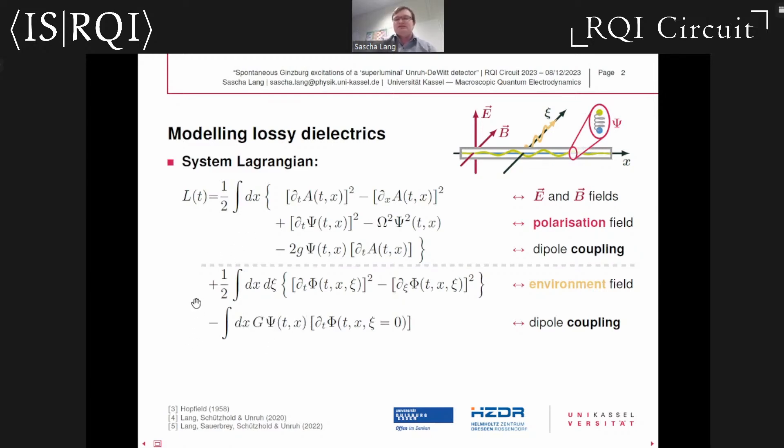This Lagrangian can be used to derive a consistent quantum mechanical treatment via canonical quantization. One can then work out Heisenberg equations of motion, and they have surprisingly simple solutions. I'll give you a brief idea on how this works. We consider the equation of motion for the environment field. This field obeys this driven wave equation, which has a source term involving the medium polarization.